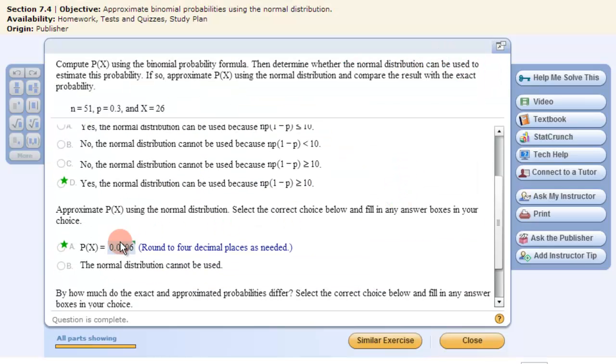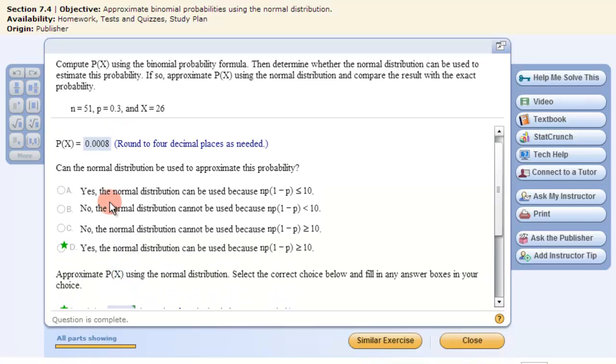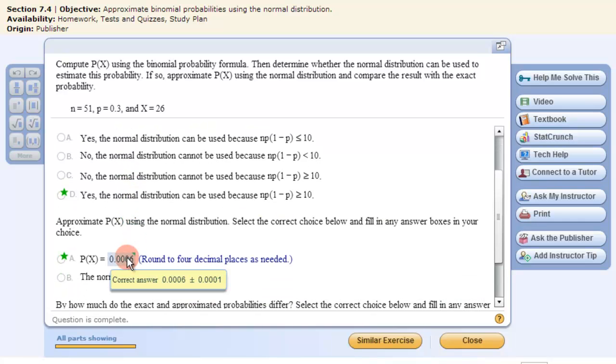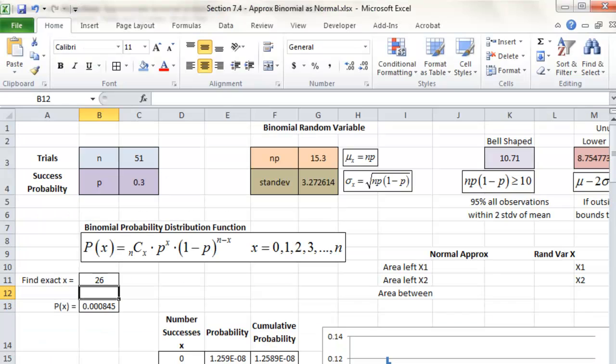Now let's go down here. This is the answer for the normal approximation. Notice it's different than the one created with the binomial probability calculations. Let's use our normal approximation. I have a little table here set up. Basically I have random variables x1, x2, and then I'll be showing the areas to the left of them here, and then if I create one in between.